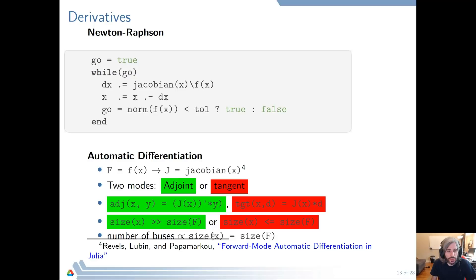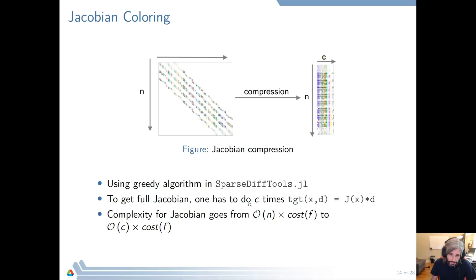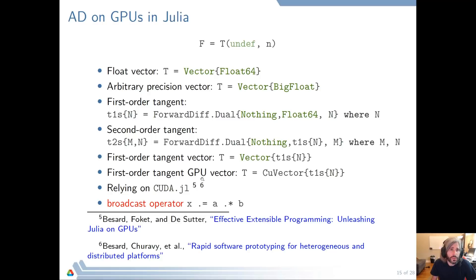The size of the Jacobian grows very fast with the increase in system size, specifically with the number of buses. So we have to make that faster using what is called Jacobian coloring, implemented in SparseDiffTools using the greedy algorithm. We compress our Jacobian either by row or column depending on whether you use adjoint or tangent — we use tangent mode. We end up with a Jacobian that has only C columns where C is the number of colors. So when computing the full Jacobian, you only call your tangent function the number-of-colors times rather than the number-of-inputs times. The complexity goes down to the number of colors times the original function evaluation of F. Our system is indeed very sparse, so this is very useful.